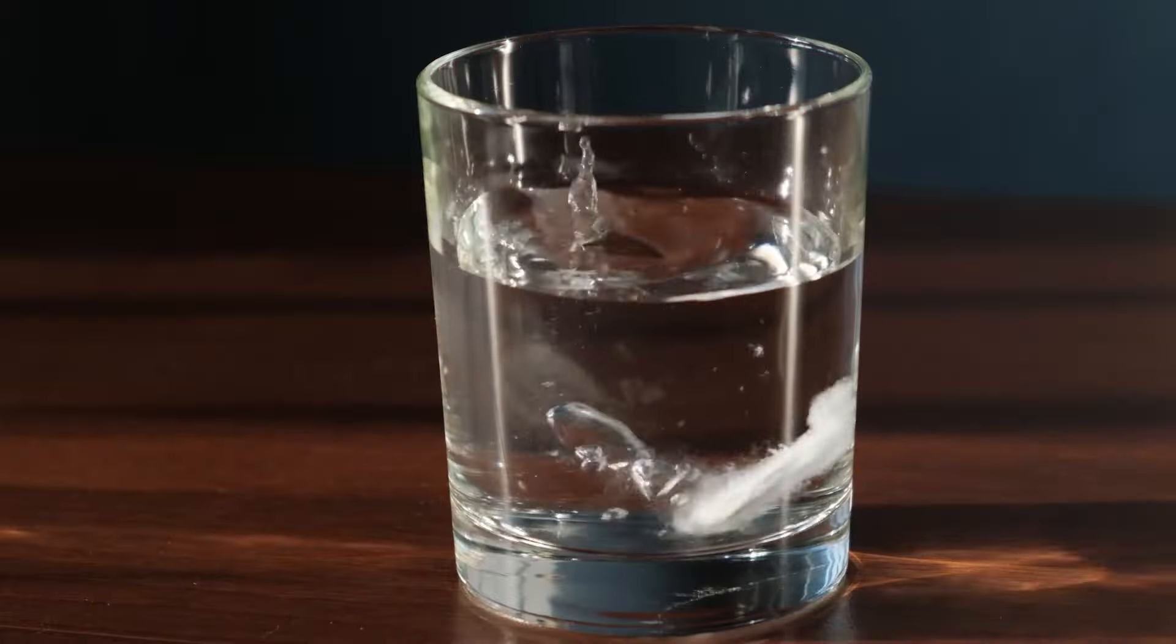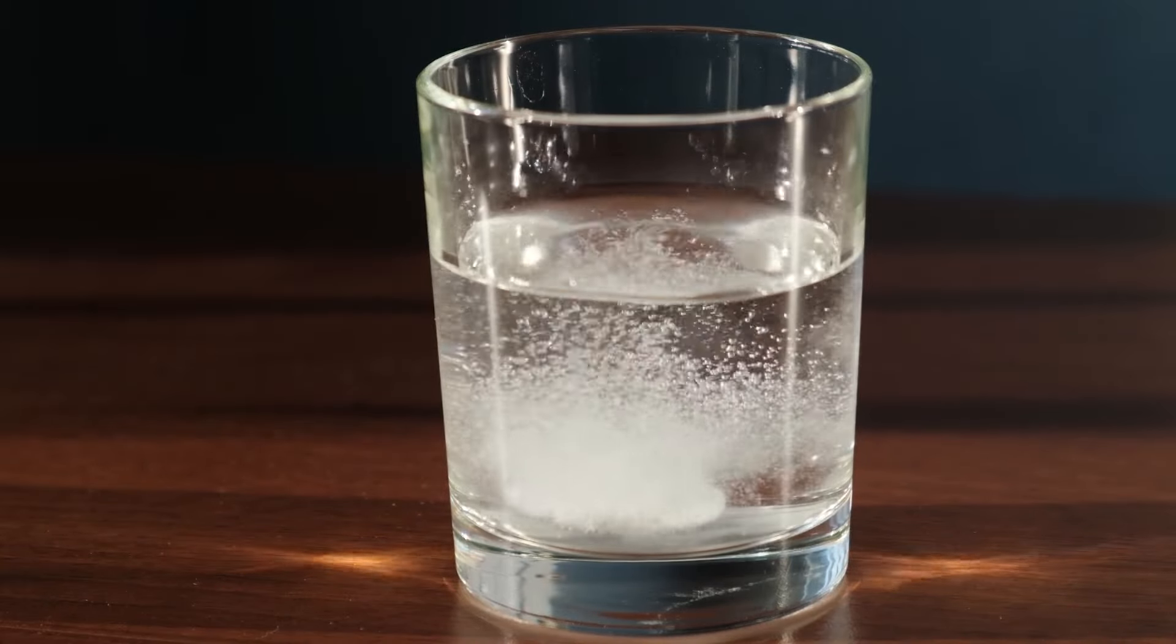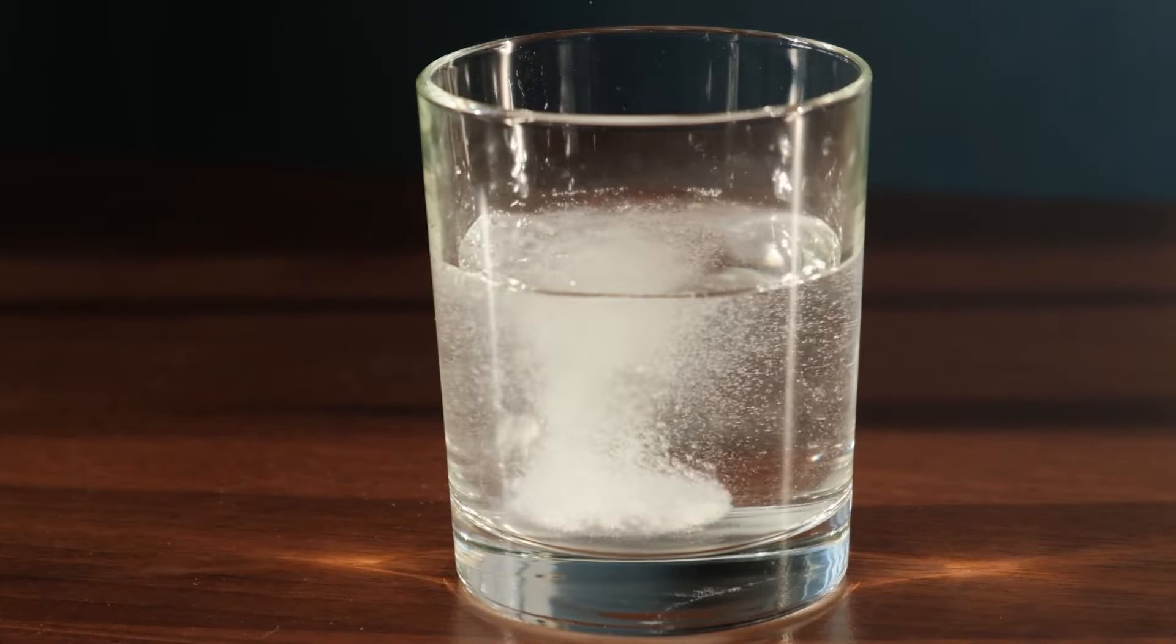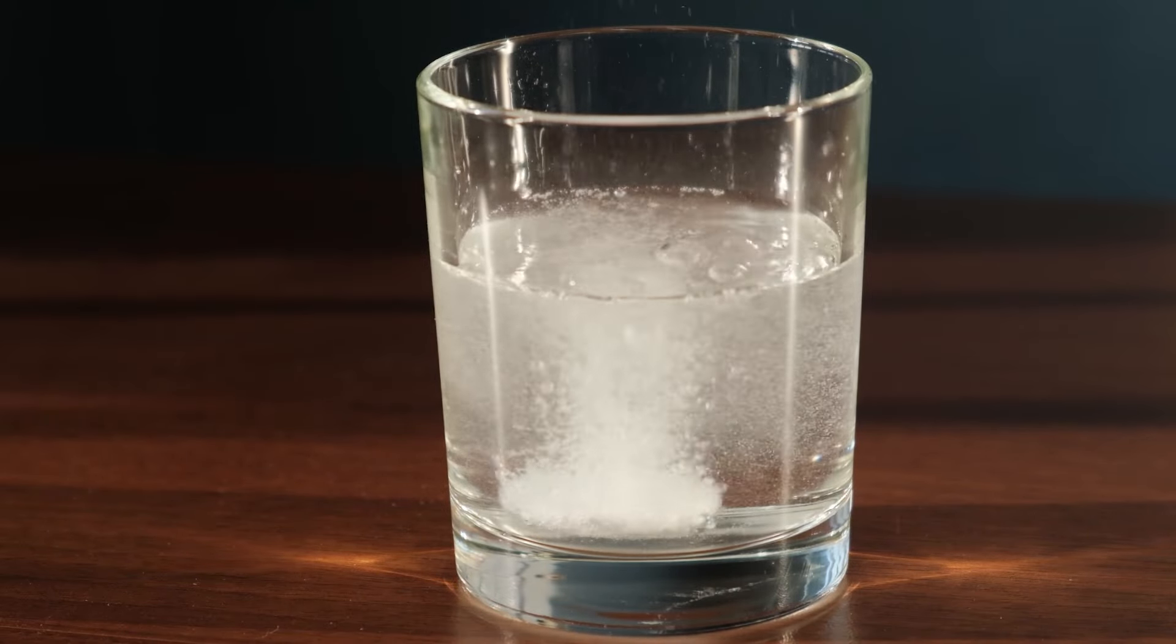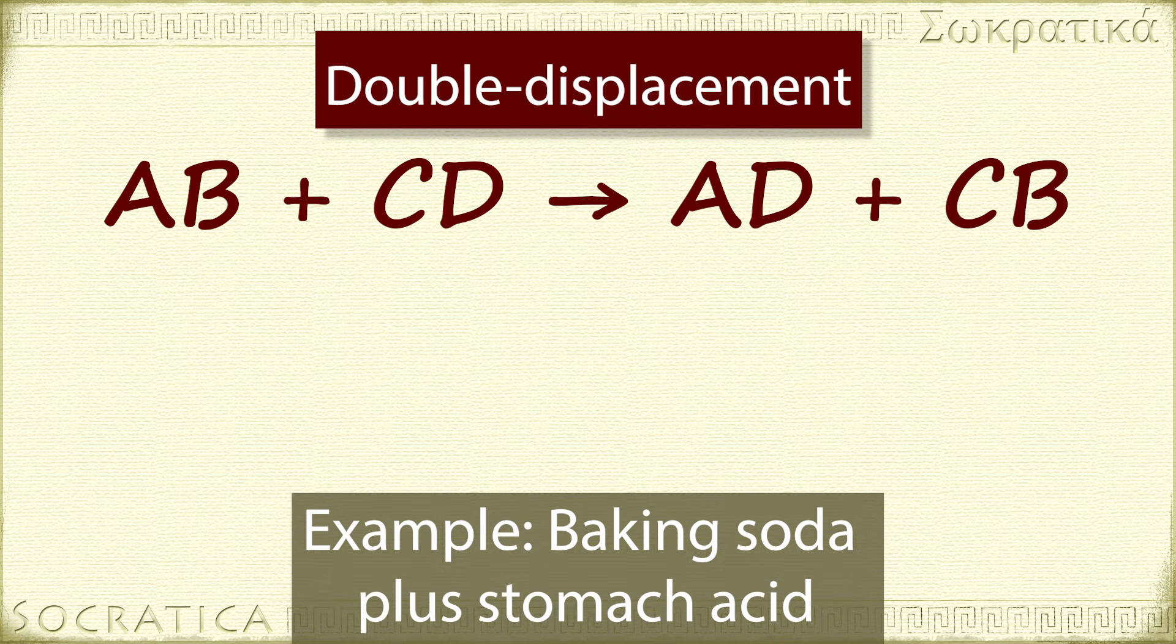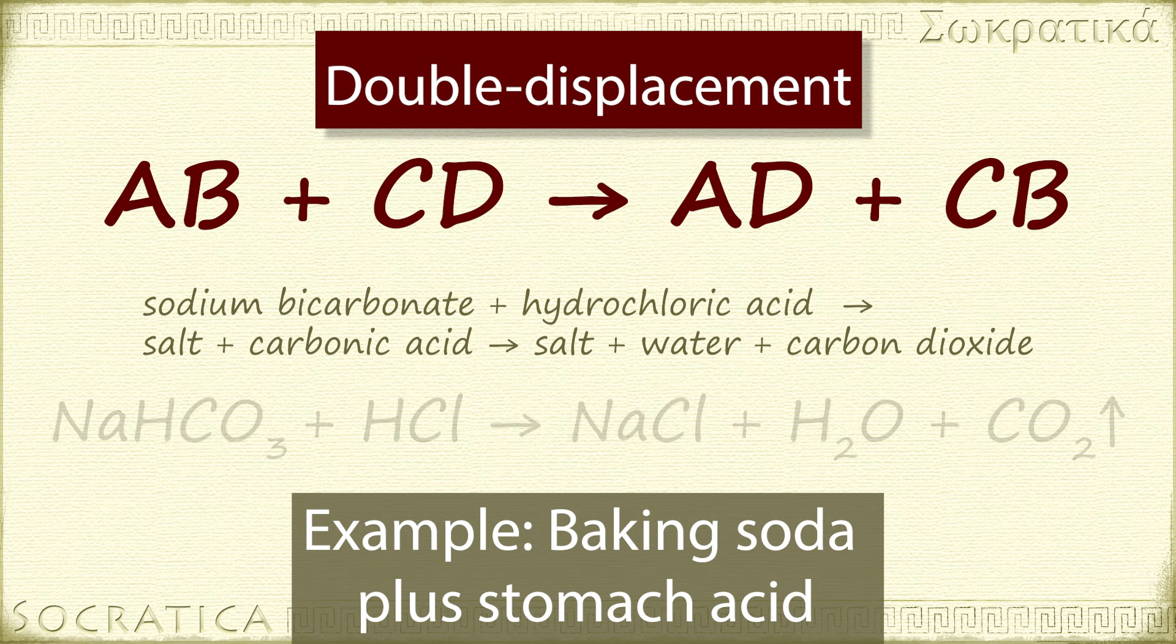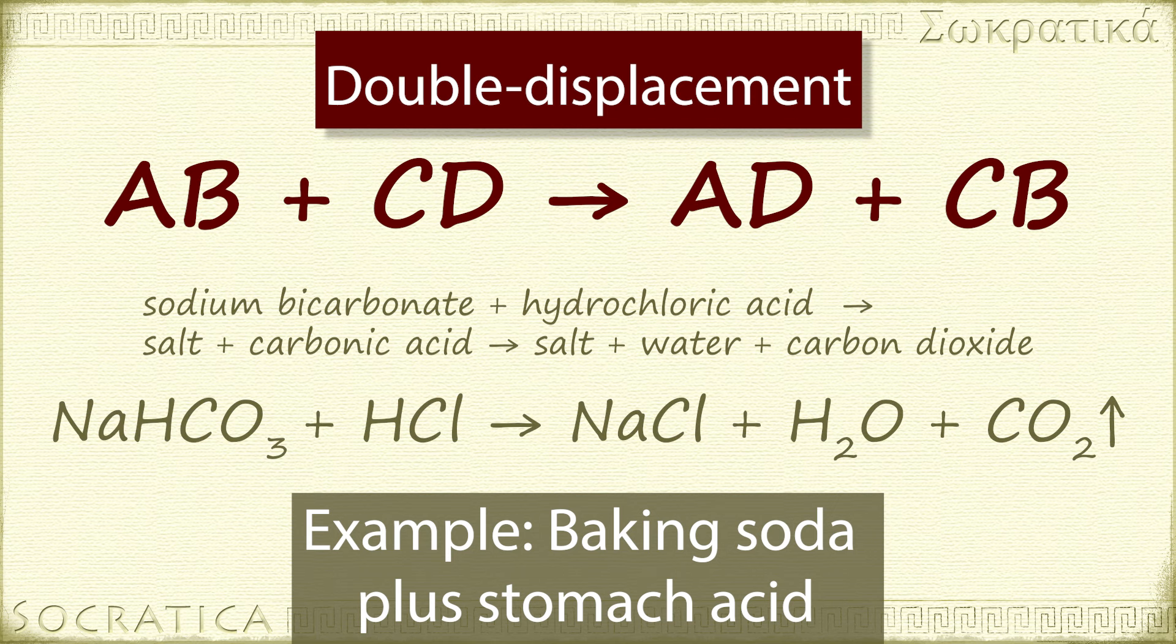Sometimes, instead of a solid precipitate, a gas is formed instead. For instance, an old home remedy for too much stomach acid is to have a little baking soda, also known as sodium bicarbonate. If you combine sodium bicarbonate with HCl, it produces salt and carbonic acid, H2CO3, and then the carbonic acid quickly breaks down into water and carbon dioxide. The final balanced chemical equation is NaHCO3 plus HCl yields NaCl plus H2O plus CO2. Notice the upwards arrow to show a gas is produced. You can also write it as g in parentheses.